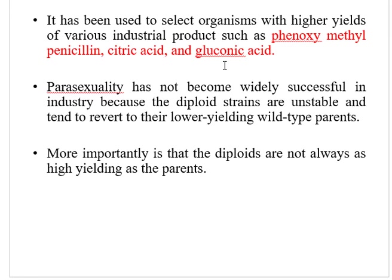Regarding the significance of the parasexual cycle: it is important in industrial processes, although not widely successful. Several fungi used in various industrial processes belong to Fungi Imperfecti or Deuteromycetes, and in these fungi only the parasexual cycle operates. New and better strains of these fungi are obtained by mutation through the parasexual cycle. Strains of desirable characteristics can be developed through mitotic recombination. Parasexuality can also be employed in analysis of genetic and physiological processes of perfect and imperfect fungi, and has been successfully employed in genetic control of pathogenicity in several species.